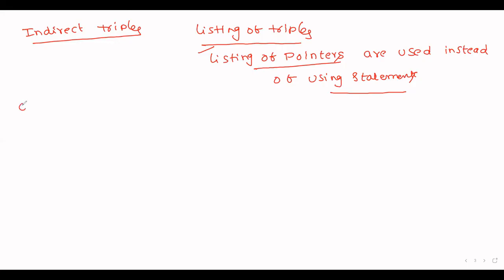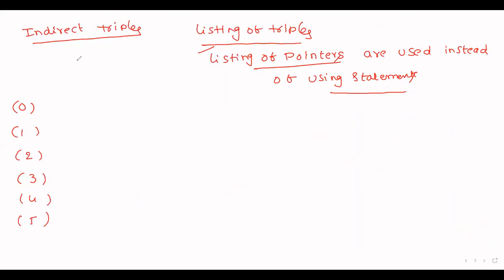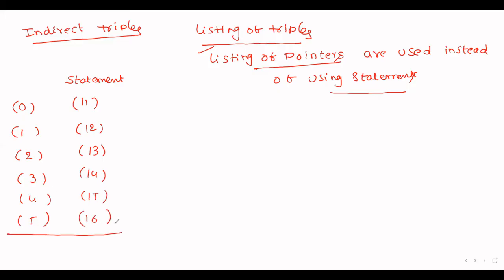Construct a pointer table. This table consists of entries 0, 1, 2, 3, 4, 5 — corresponding to the 0 to 5 statements we have. Those are represented starting from some number, for example 11, 12, 13, 14, 15, 16. You can start from any number, not only 11.